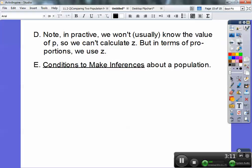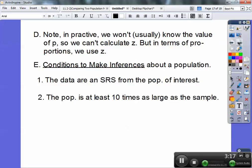So conditions to make inferences about a population: the data has to be an SRS from the population of interest, the population is at least ten times as large as the sample, and both n times P-hat and n times one minus P-hat is greater than or equal to ten.